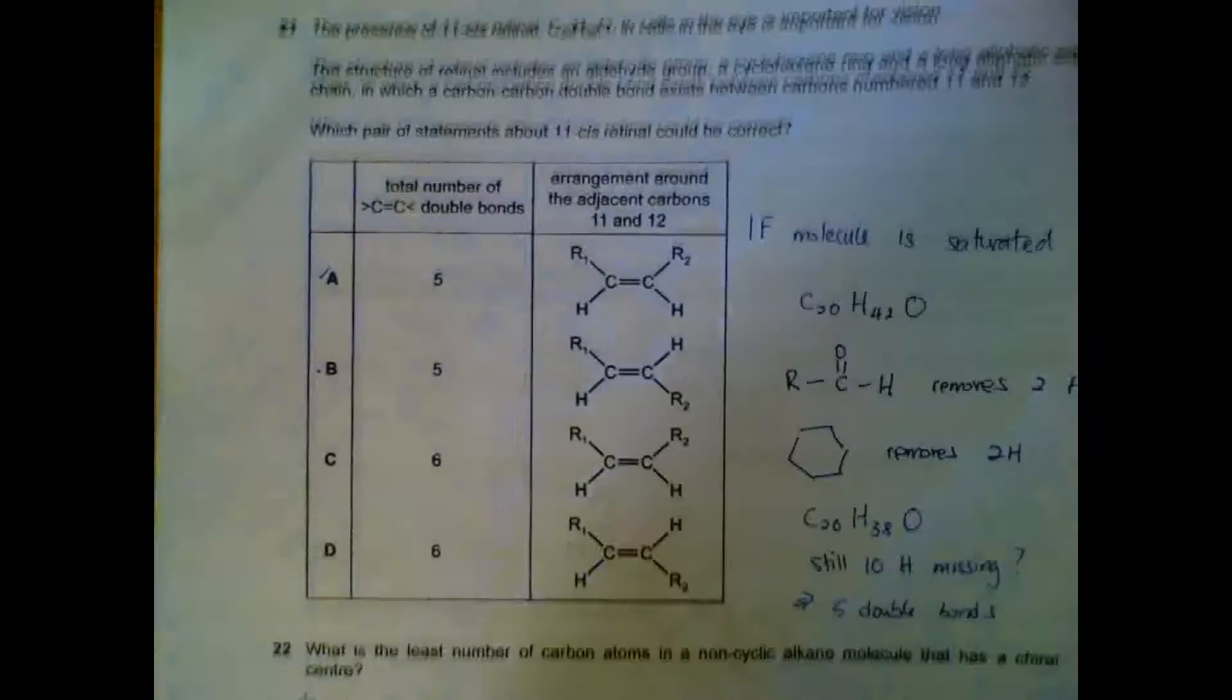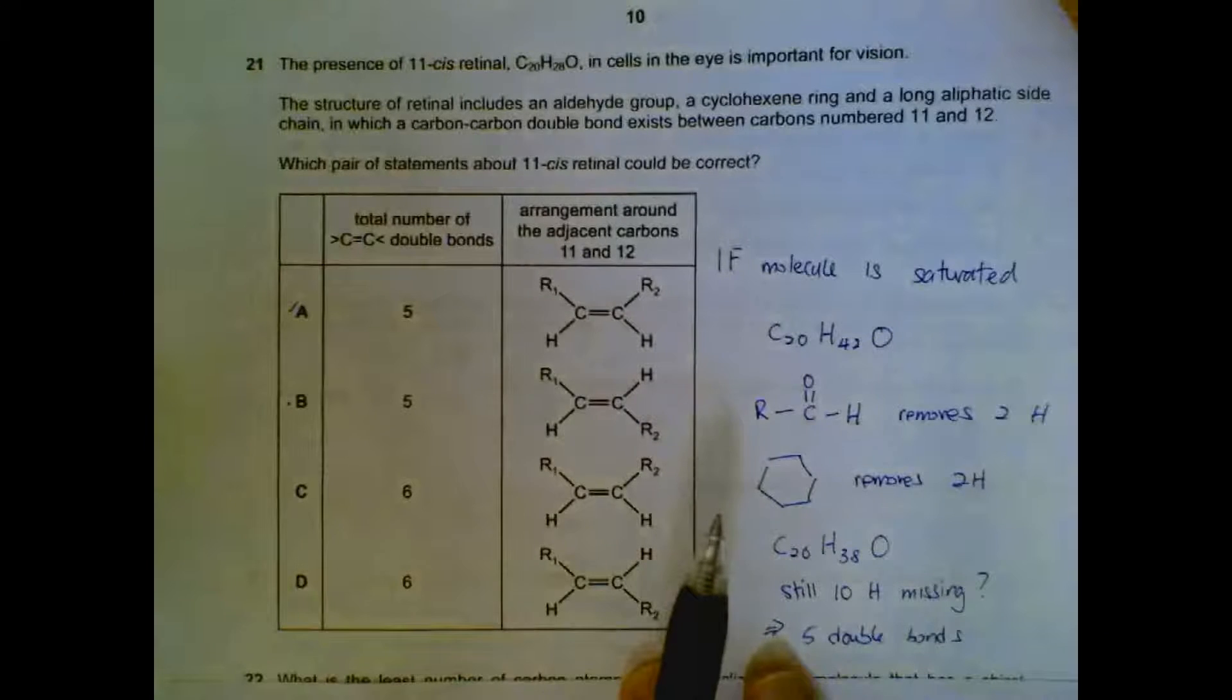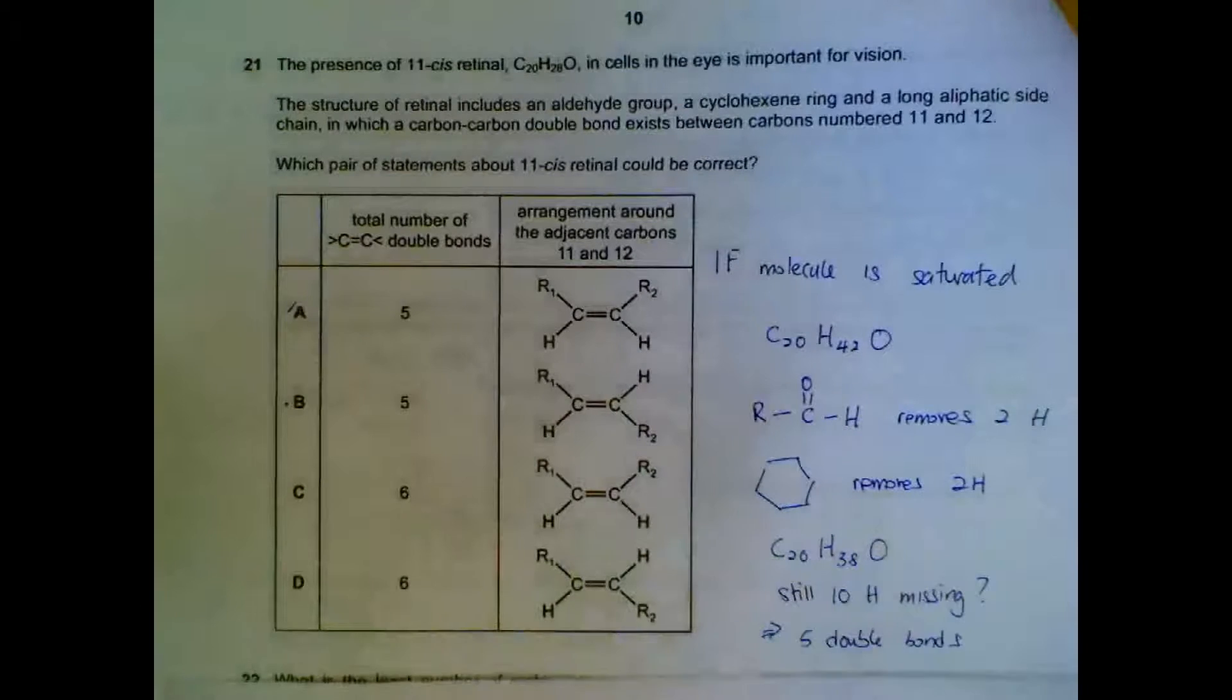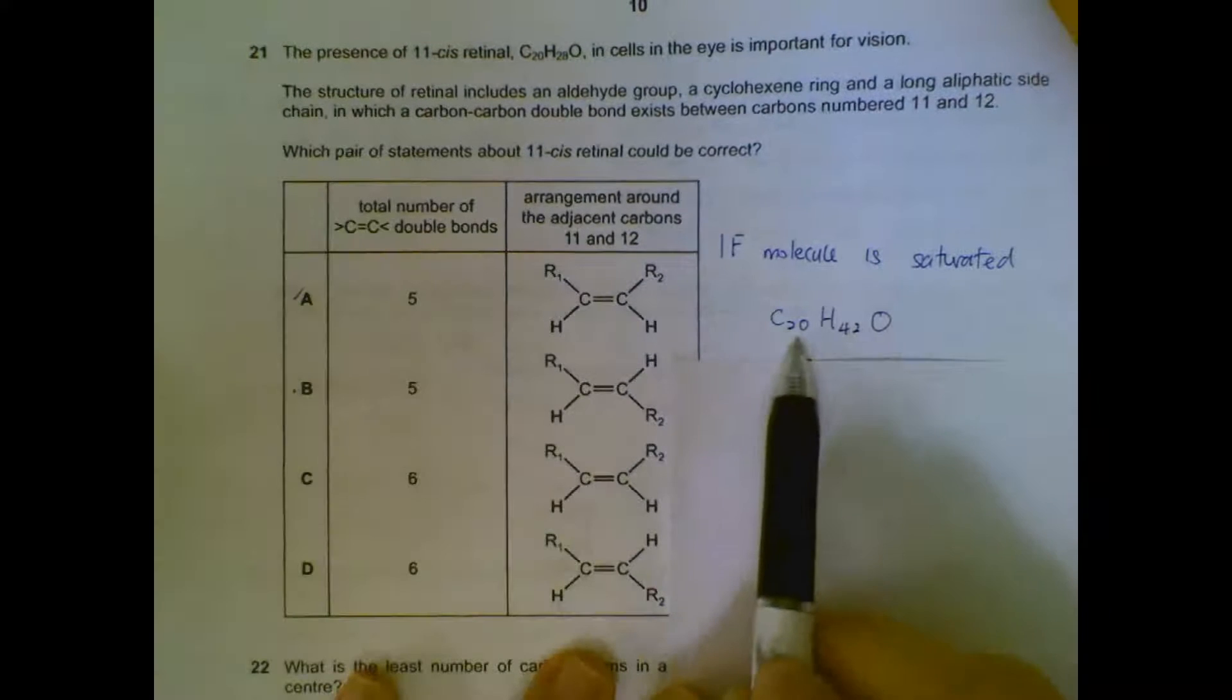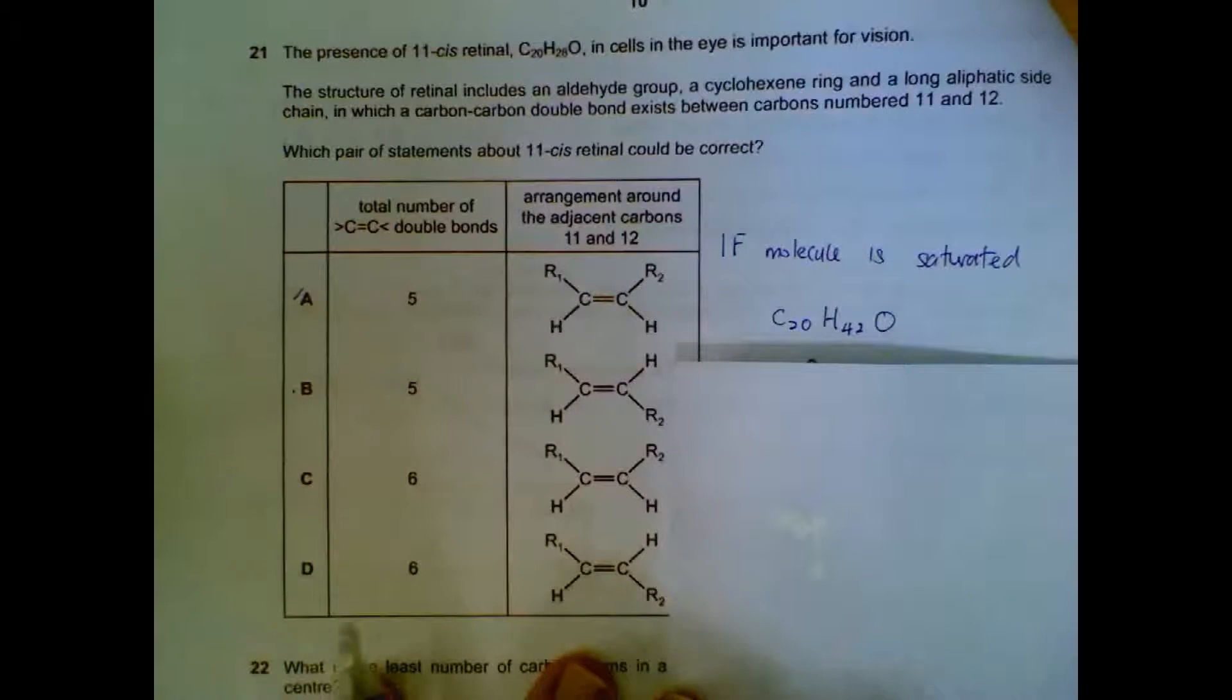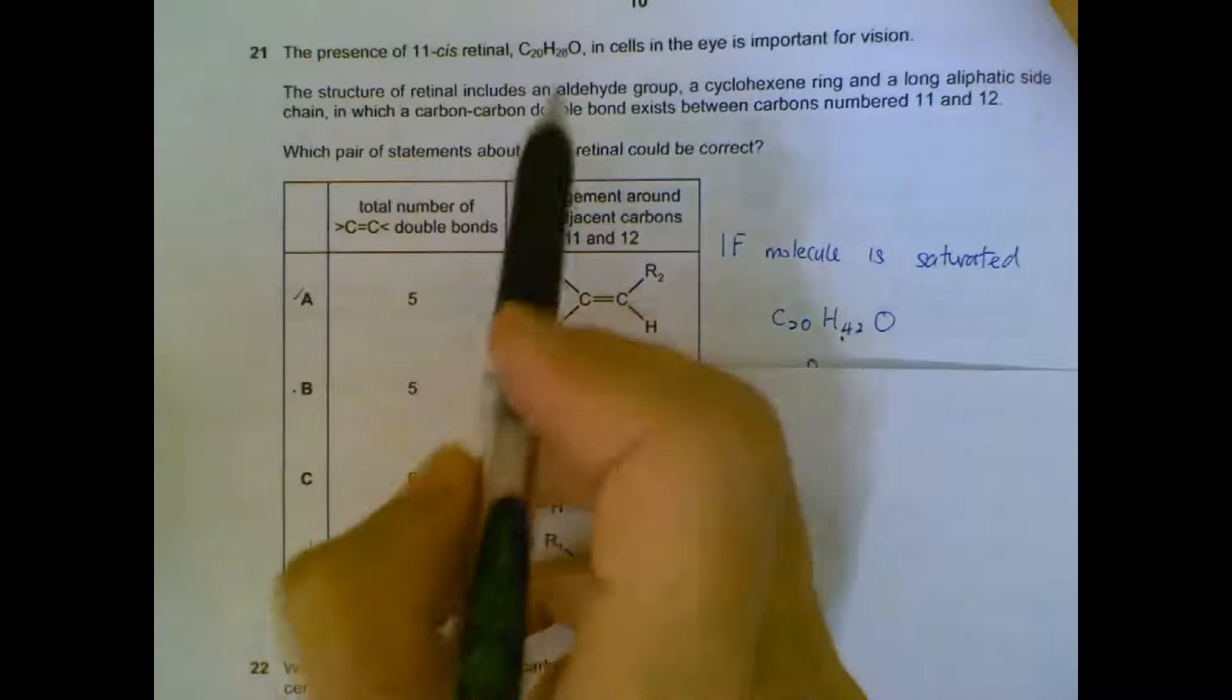Question 21 is a question that has given students a bit of problem. We have this molecule, C20H28 and one oxygen. And then they want you to find out the structure using all these clues here. So let's work on it step by step. If the molecule is saturated, meaning if all the carbons were single bond, then we will have C20, 20 times 2 plus 2, CnH2n+2. We should have 42 hydrogen and the oxygen remains there. So if it was saturated, we should have this number of hydrogen. That's the key thing to start off with.